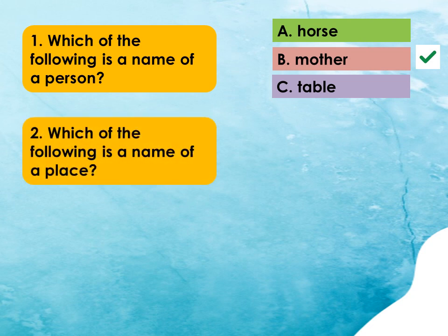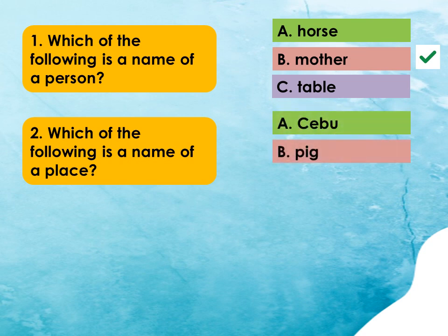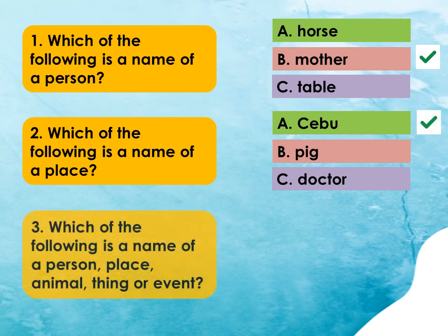Number 2: Which of the following is the name of a place? A. Cebu, B. Pig, C. Doctor. That's correct! It's A. Cebu.